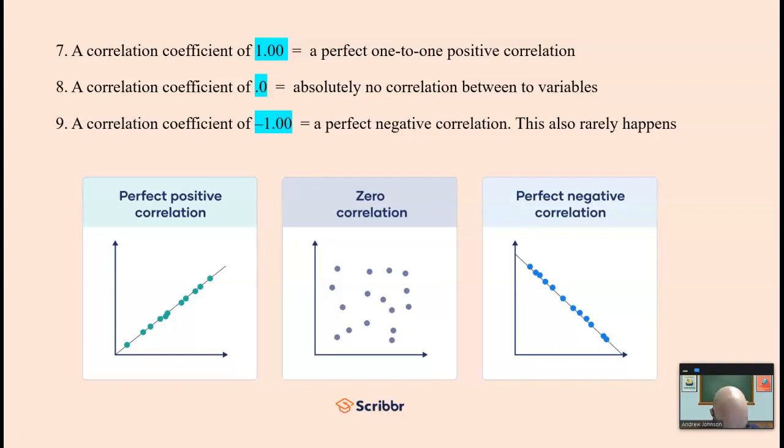A perfect correlation of one means there is a perfect one-to-one correlation. One goes up, this is perfect, the other goes up. Perfect negative one, one goes up, the other goes down. And zero correlation: there's absolutely no relationship between the two. Perfect negative or positive very rarely happens.